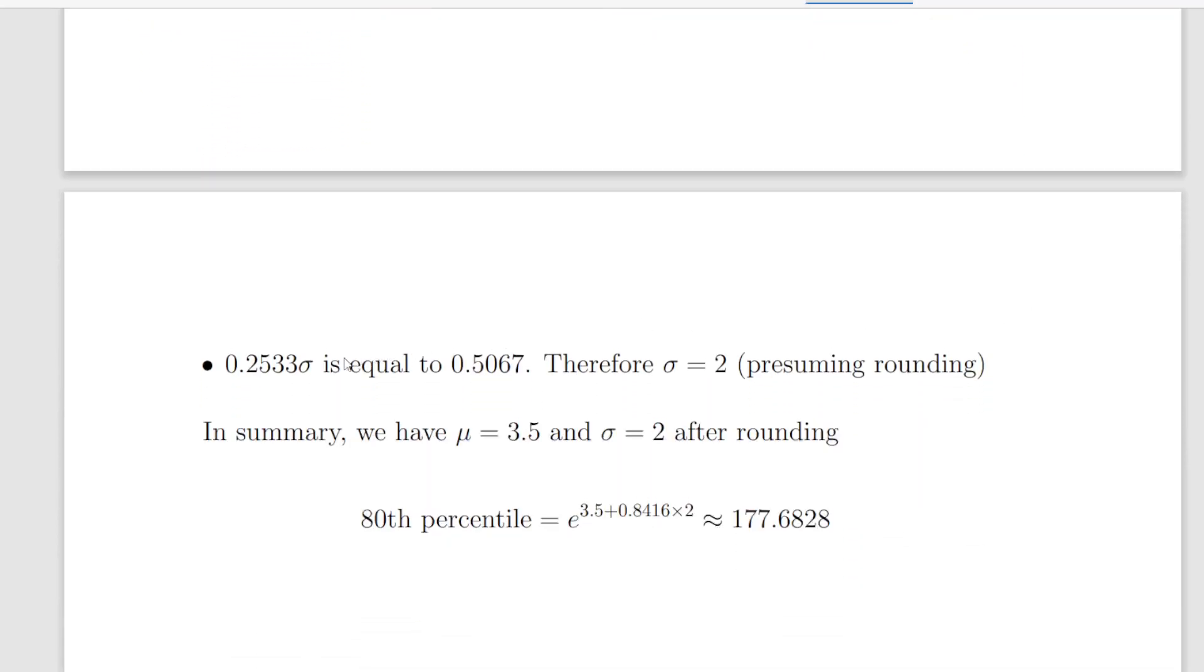Now what we can do here is figure out what sigma should be. So 0.2533 must equal to 0.5067. And assuming a little bit of rounding, that means that sigma is equal to 2.